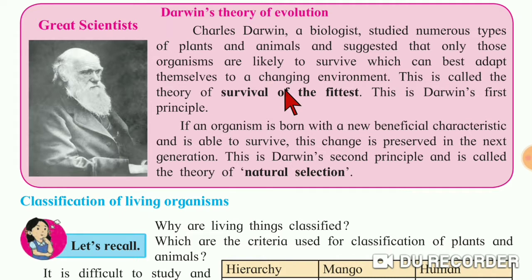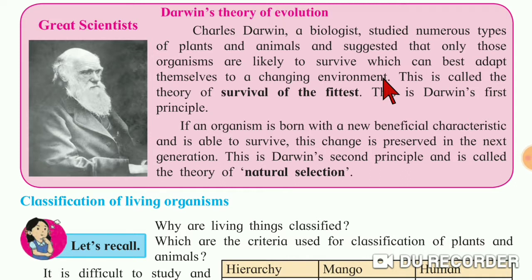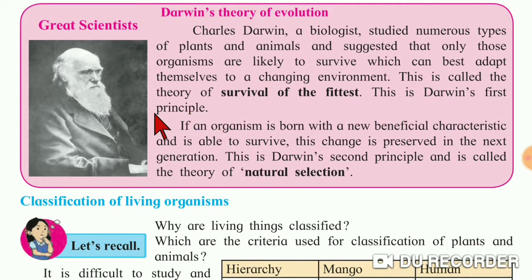As Darwin observed many plants and animal species, he suggested that only those organisms are likely to survive which can best adapt themselves to a changing environment. This is called the theory of survival of the fittest, and this is Darwin's first principle.